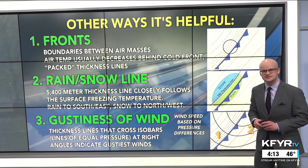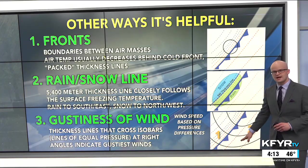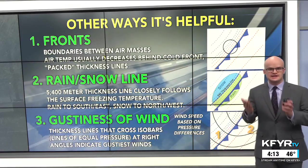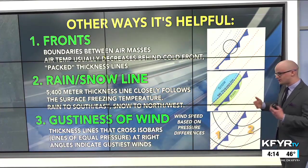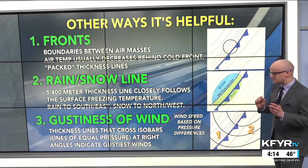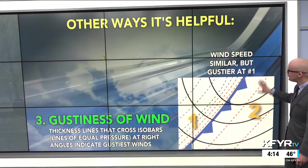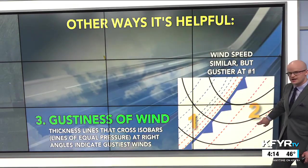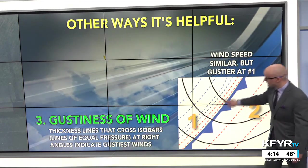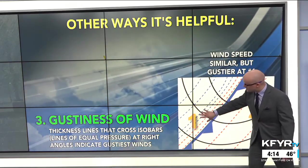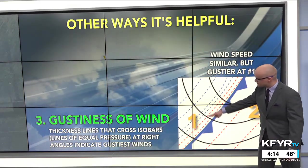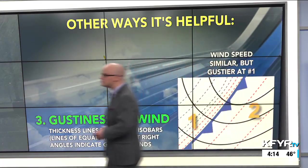Another way thickness is helpful is with the rain-snow line. The 5,400-meter thickness line closely follows where the surface freezing temperature is — rain to the south and east versus snow to the northwest. Also, the gustiness of wind can be correlated to thickness. Wind speed is based on pressure differences at Earth's surface, but gustiness can be tied to thickness lines that cross the isobars — our constant pressure lines — at right angles, indicating the gustiest winds. Winds would be gustier at the point where thickness lines cross isobars at right angles compared to where they don't.